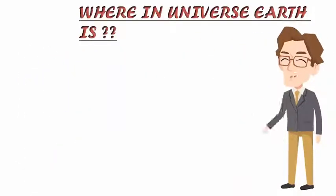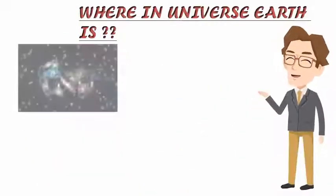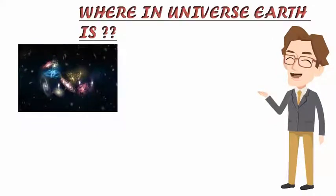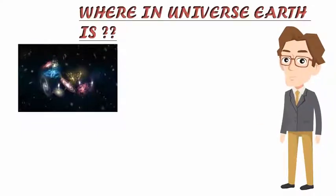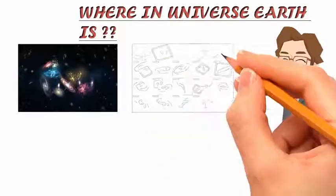The Virgo supercluster is an irregular group of clusters of galaxies, between 100 and 200 million light years in diameter, which incorporates our local group of galaxies and about 100 other clusters. The local group is located in a small filament on the outskirts of the supercluster.